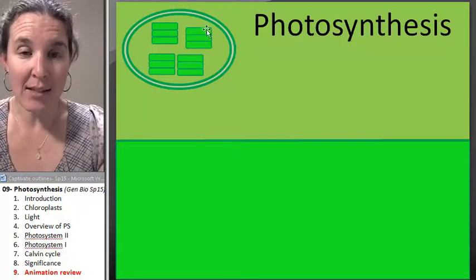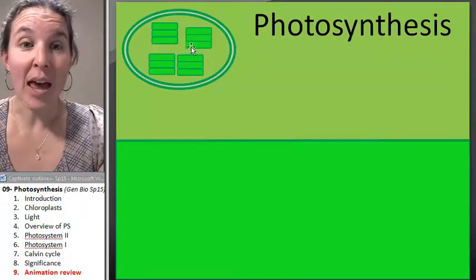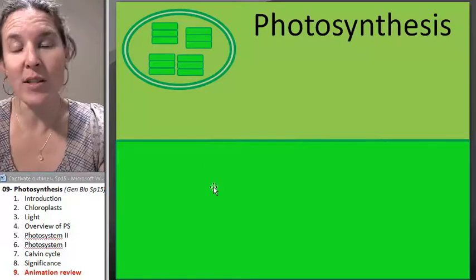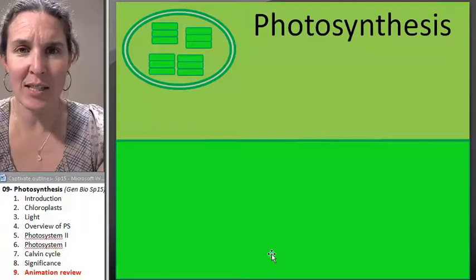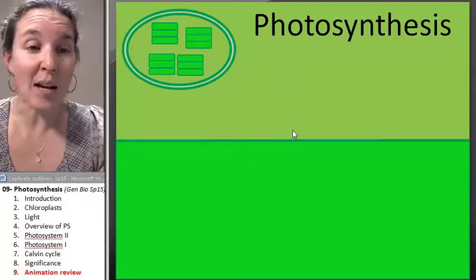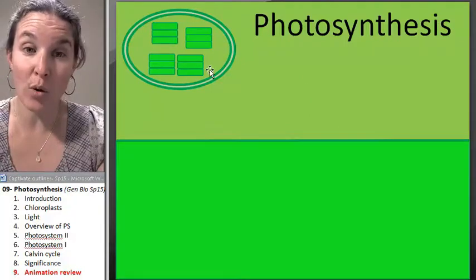This is a chloroplast. These are grana, and each one of these is a thylakoid. And so remember, if you just color code yourself, you'll see that this is the thylakoid space. This is actually the stroma. Last time it was the cytoplasm. This time it's the stroma of the chloroplast itself.